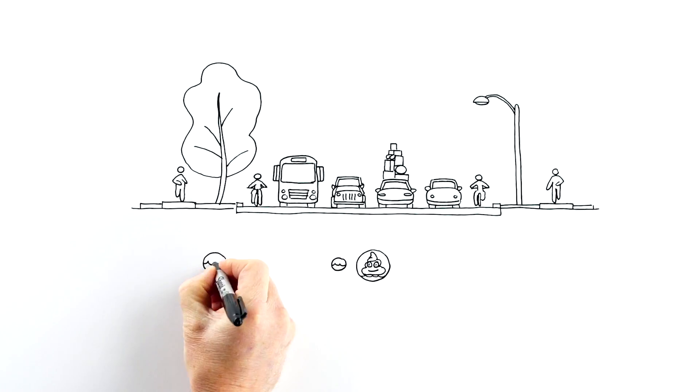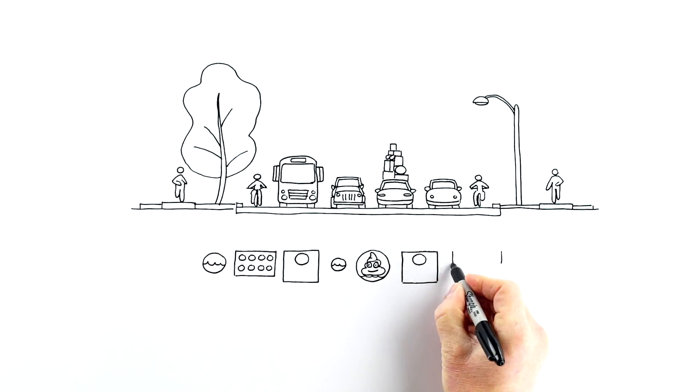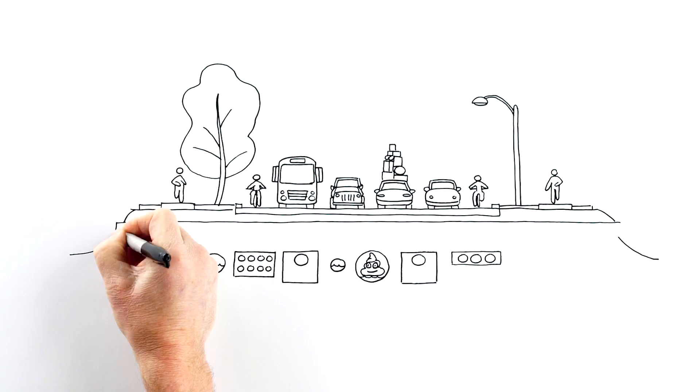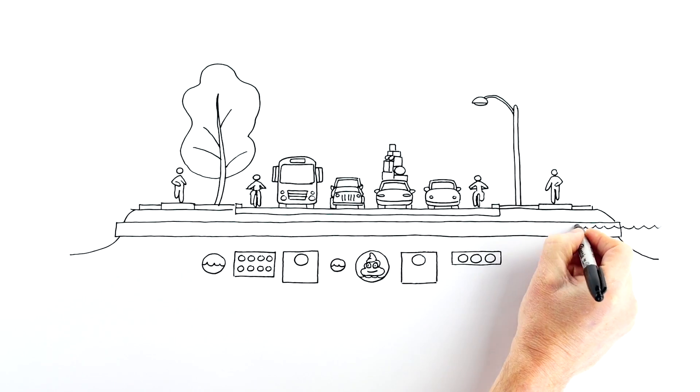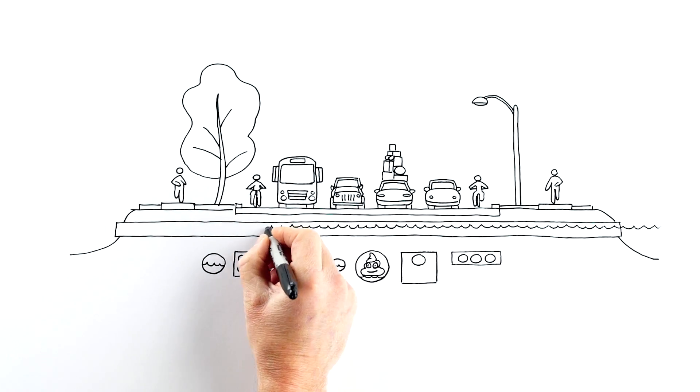But below are sewers, water, stormwater, electric, and cable utilities. And when a street is built over a waterway, it even incorporates fish passage into the design.